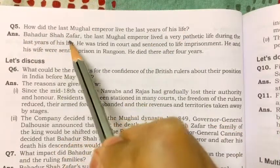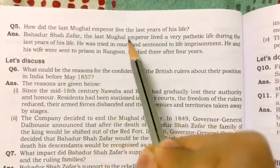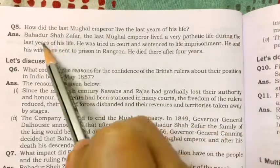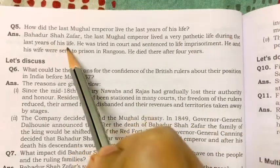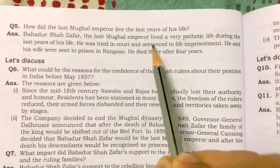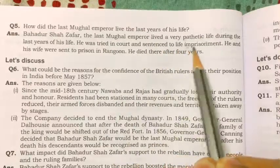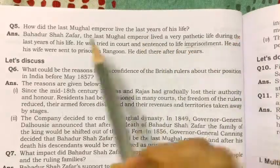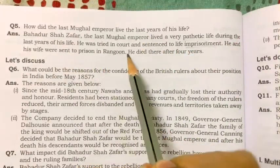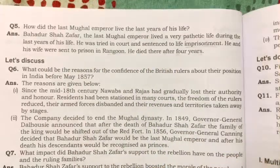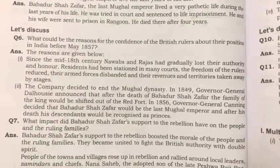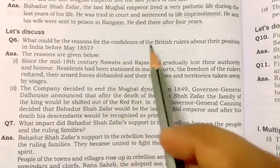How did the last Mughal emperor live in the last years of his life? Bahadur Shah Zafar, the last Mughal emperor, lived a very pathetic life. He was tried in court and sentenced to life imprisonment. He and his wife were sent to prison in Rangoon, where he died after four years.